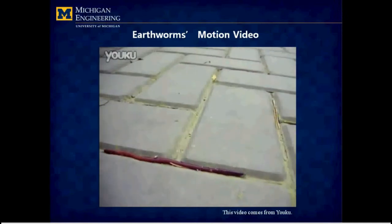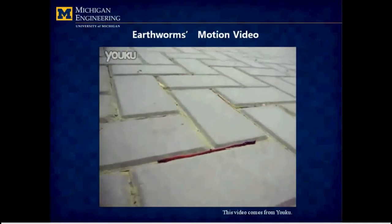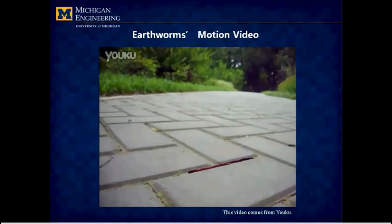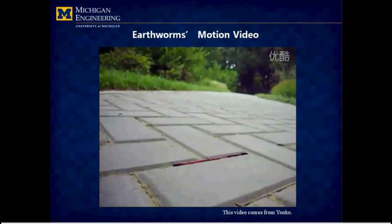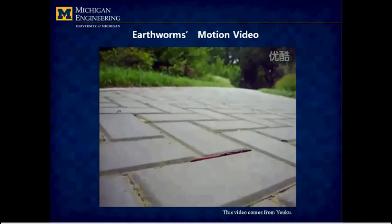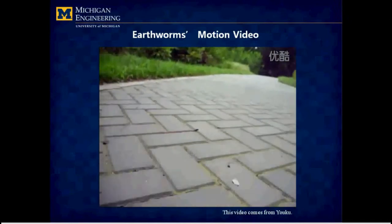One of the most feasible methods to design such robots is learning from animals, such as Earthworm. Now, let's briefly have a look at body structure and locomotion mechanism of the real Earthworm.